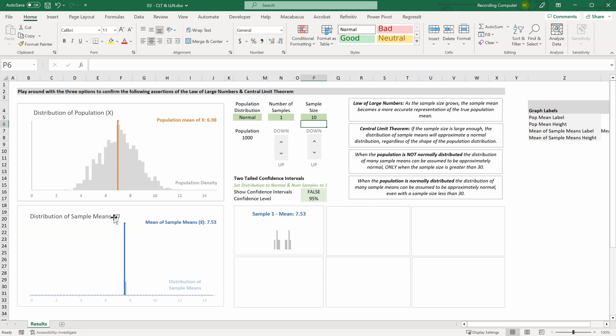Over to the left, in this chart underneath our distribution of population, we see the distribution of our sample means. This takes the mean from each of our individual samples, from each of our smaller charts, and it plots them within one chart here. We will start this exercise with a population distribution of normal, one sample, and then a sample size of three.